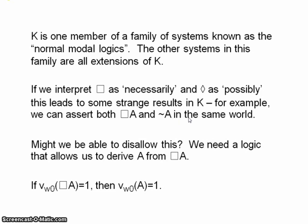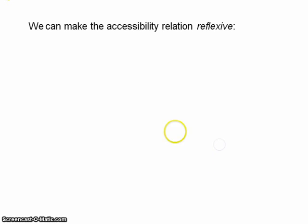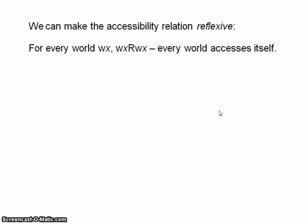One way of generating new modal logics is to alter the accessibility relation. So let's say that we keep all of our usual rules the same, all the propositional rules, all the modal rules, they're all exactly the same, we just alter the accessibility relation. What we need to do is make it reflexive, so that every world accesses itself. So in other words, for all our worlds Wx, Wx is accessible from Wx.